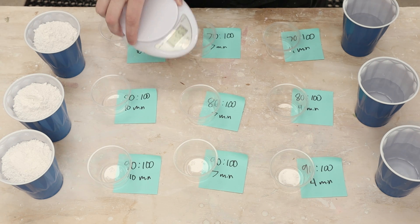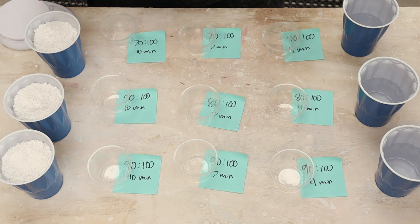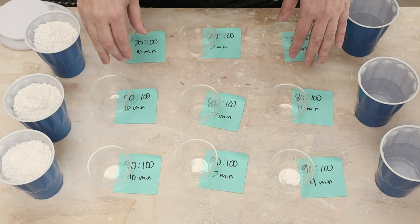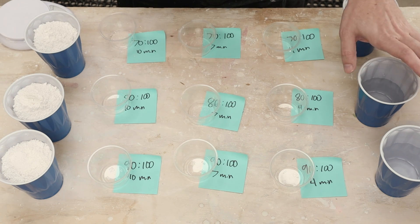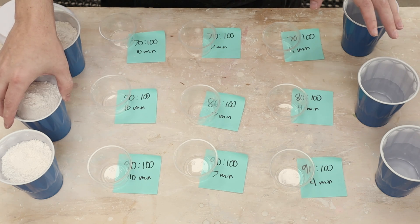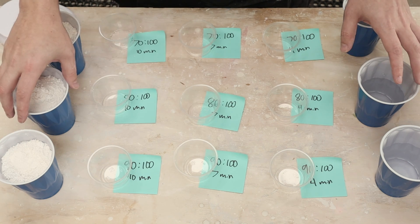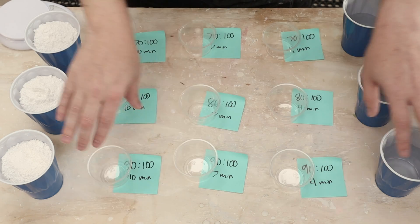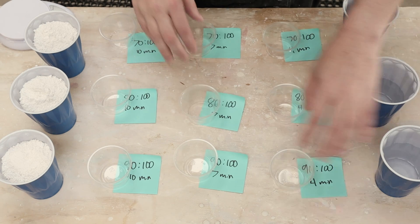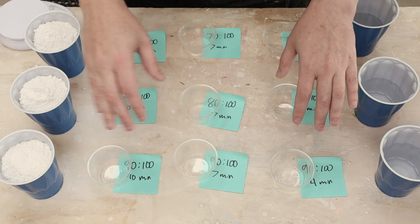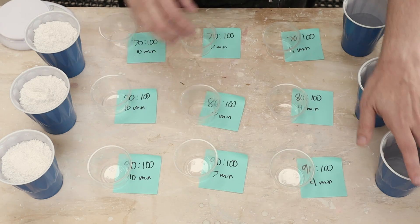Next row is for a ratio of 80 grams of water to 100 grams of plaster. So again, times three. So this is 240 to 300. And then finally, this is for 90 grams of water to 100 grams of plaster. So 270 to 300.